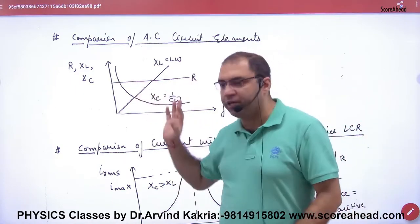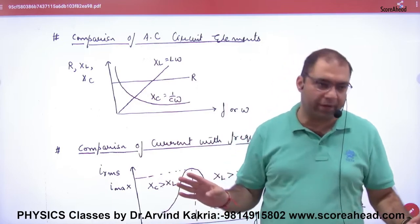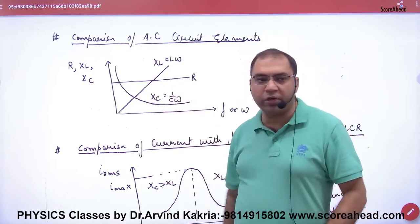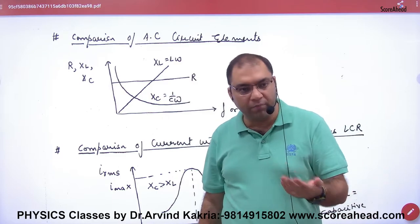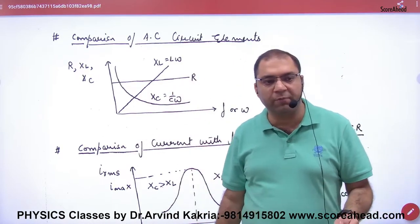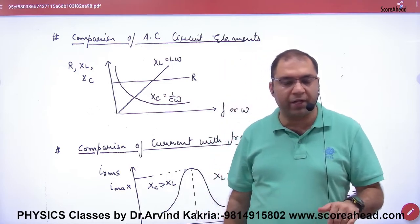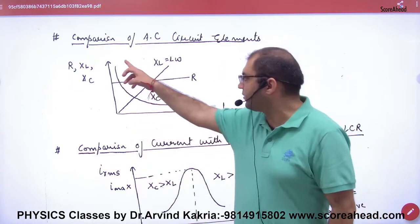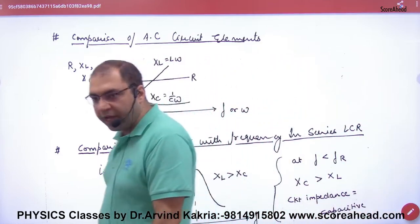R doesn't have a difference with omega, R is independent of omega. XL is L omega, if omega will increase XL will increase, so straight line. And XC is inversely proportional to omega, so if omega will increase XC will decrease. XC is inversely proportional to omega.